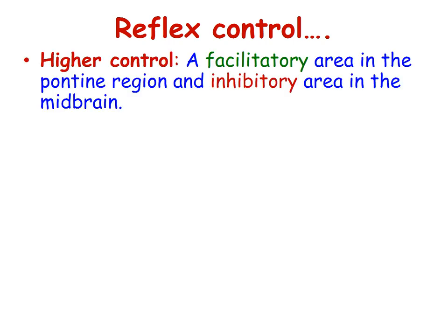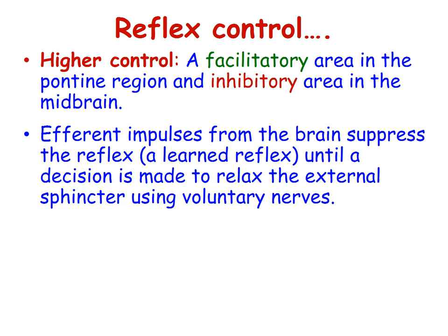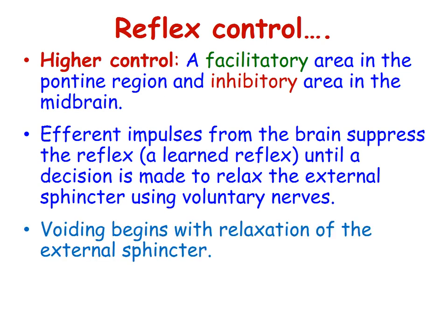There is reflex control done by the higher control system: a facilitatory area in the pontine region and an inhibitory area in the midbrain. Different impulses coming from the brain suppress the reflex, which is called a learned reflex, until a decision is made to relax the external sphincter using voluntary nerves. Voiding begins with relaxation of the external sphincter.